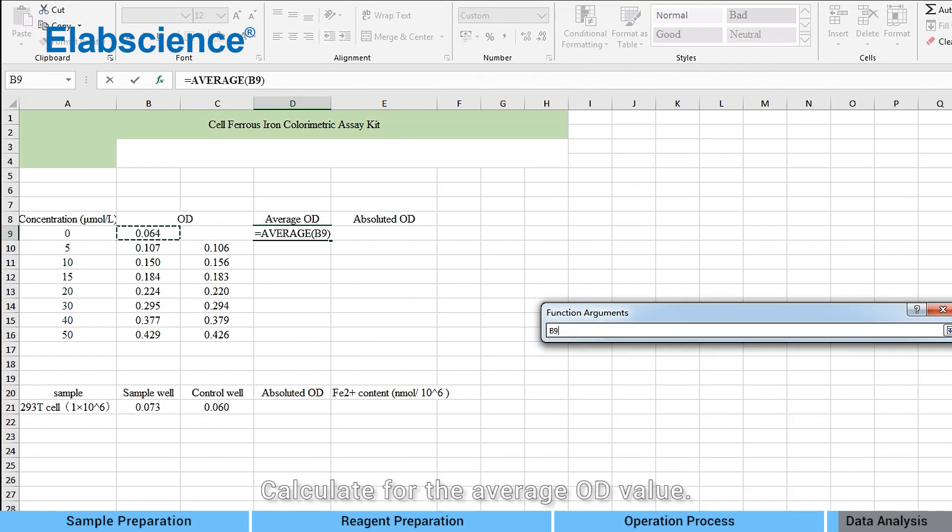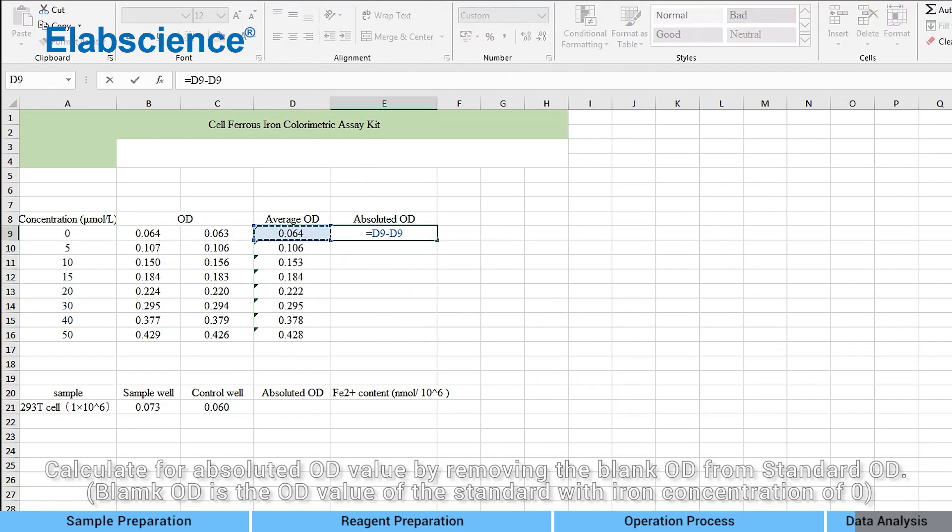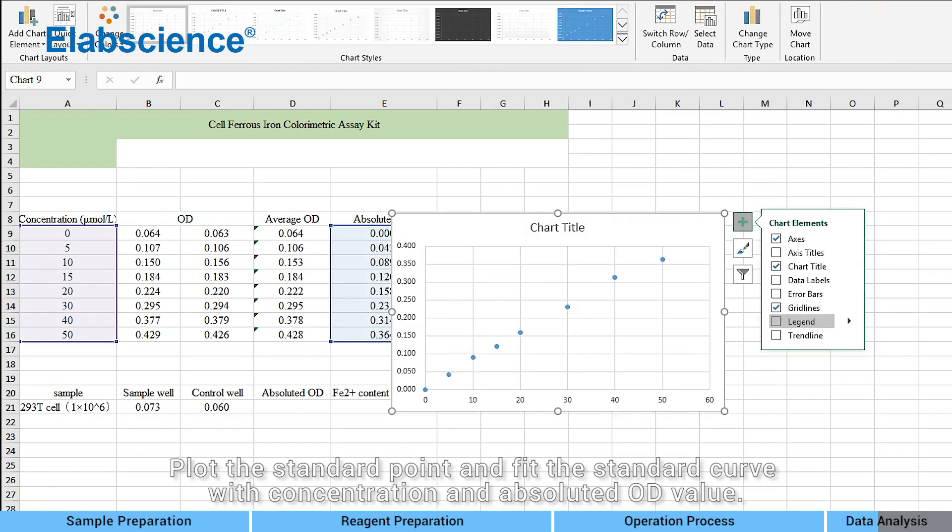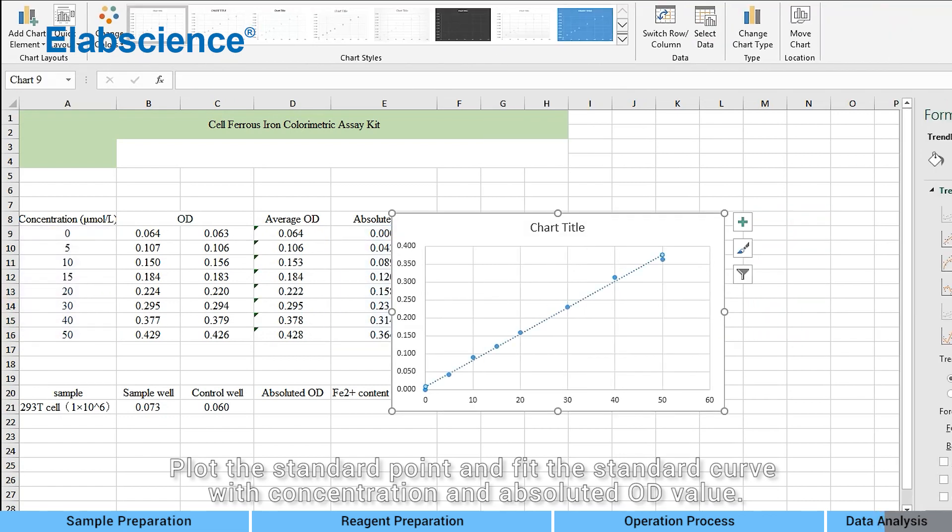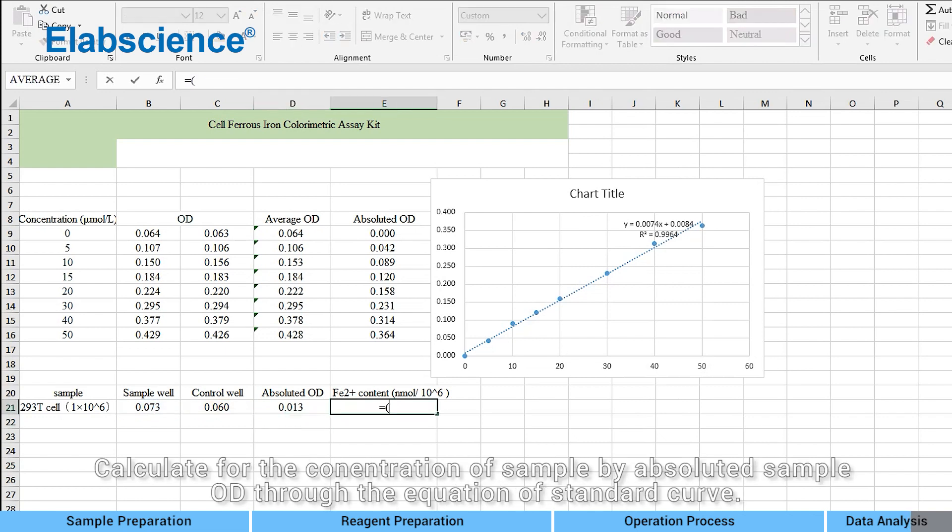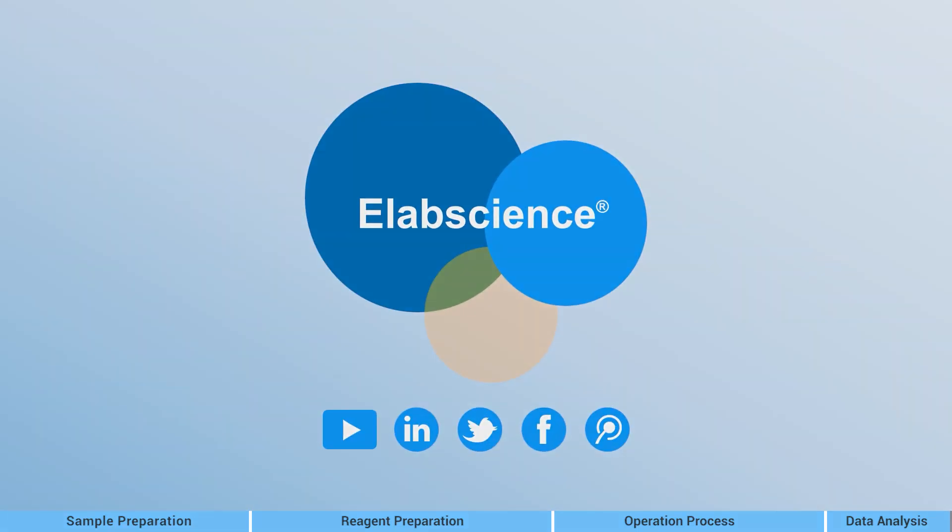Calculate for the average OD value. Calculate for absolute OD value by removing the blank OD from standard OD. Plot the standard point and fit the standard curve with concentration and the absolute OD value. Calculate for absolute OD value of sample by removing control OD from sample OD. Calculate for the concentration of sample by absolute sample OD through the equation of standard curve.